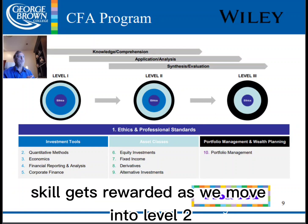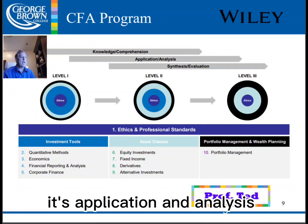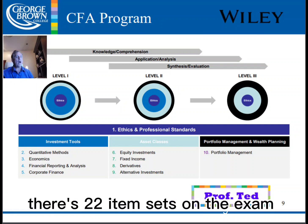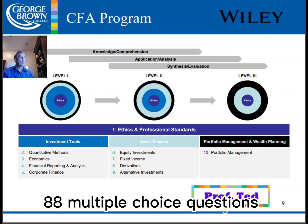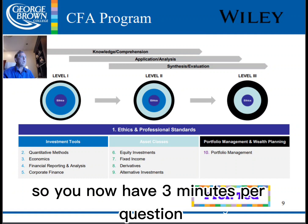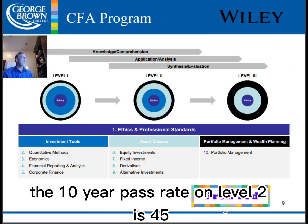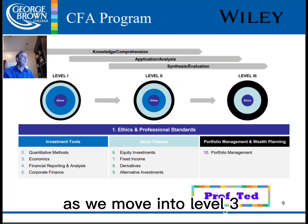As we move into level two, it's application and analysis. There are 22 item sets on the exam, 88 multiple-choice questions, so you now have three minutes per question. The 10-year pass rate on level two is 45%, and the 10-year pass rate on level one is 41%.